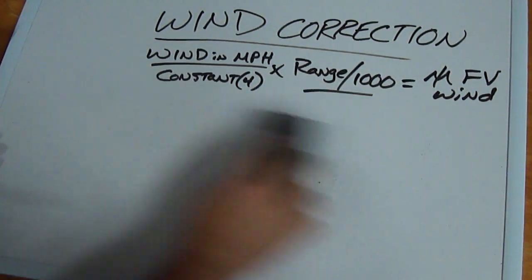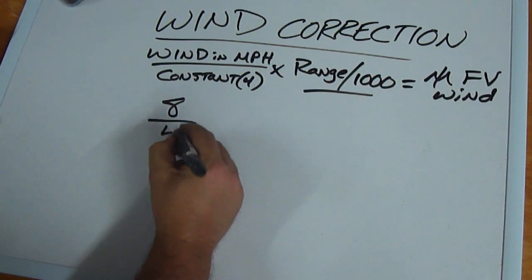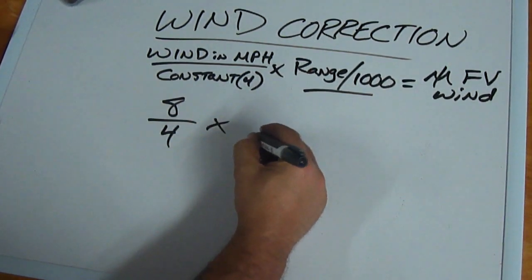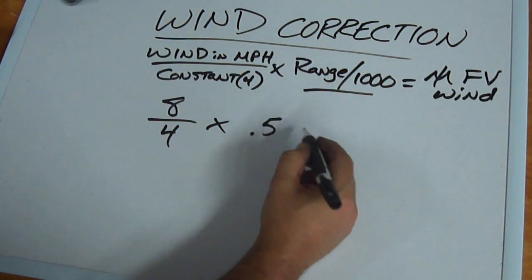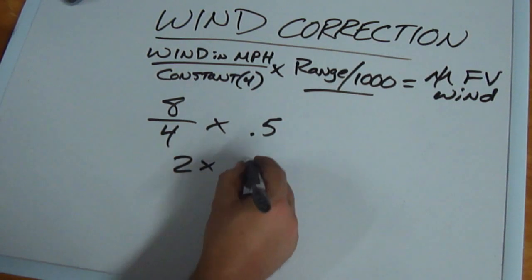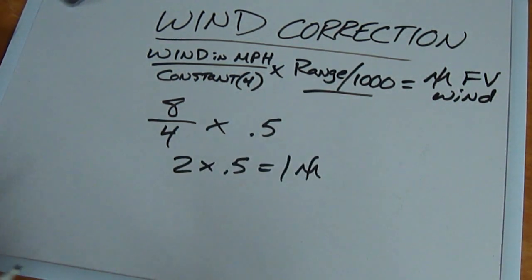If we have an eight mile an hour wind, it's going to be the same. Eight divided by four times .5, we're still at 500 yards. So eight divided by four is two times .5 equals one. We have one mil of full value wind.